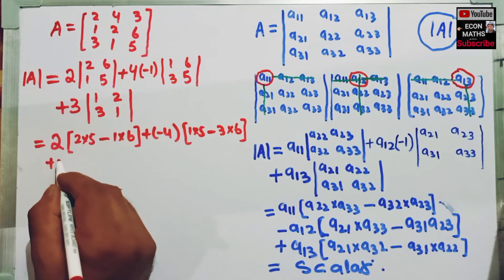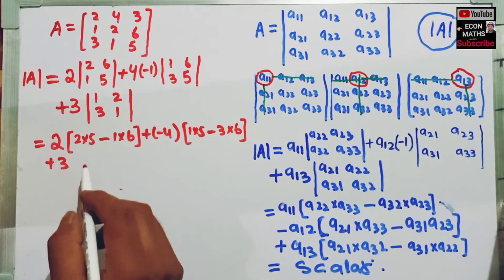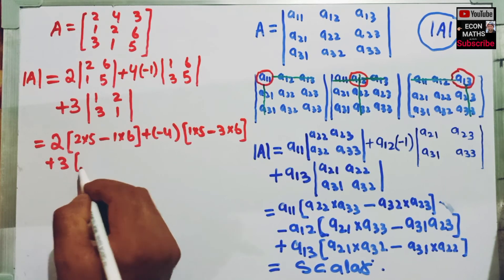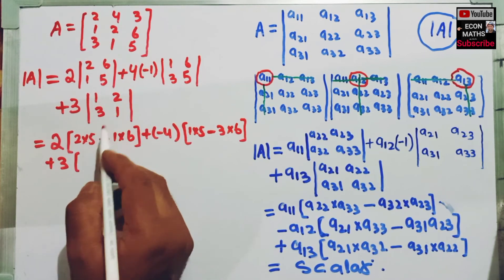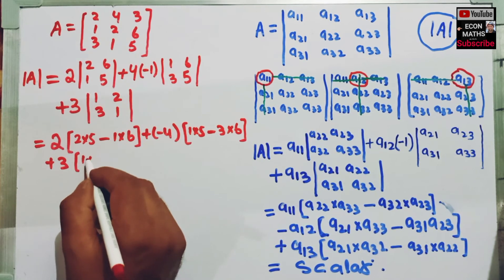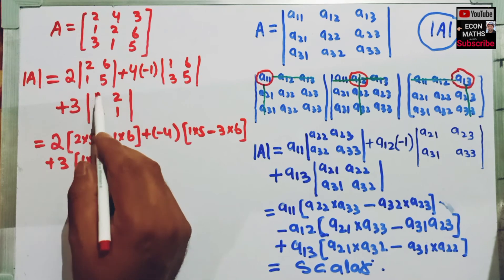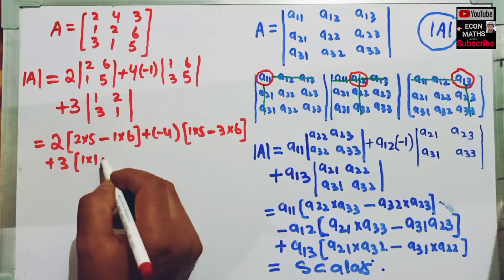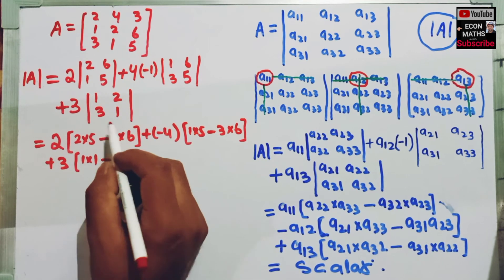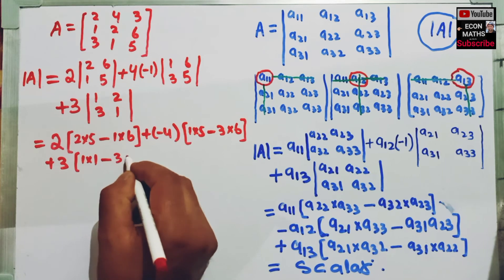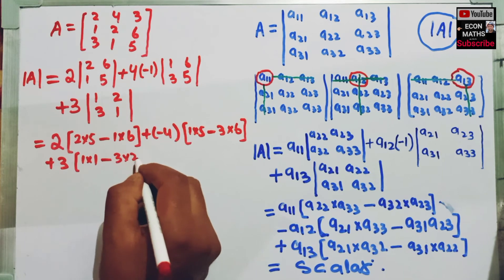Plus 3. This will become 1 into 1, that is 1 into 1, then minus the diagonal element 3 into 2.